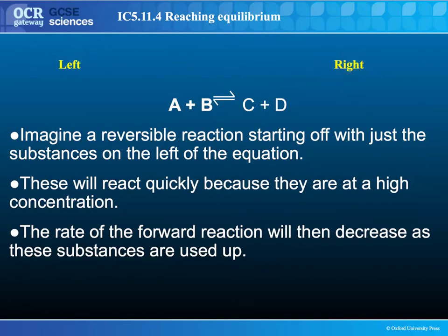But if you have C and D to start with, then the reverse reaction will occur and C and D will react to form A and B. In reality, because you've got two reactions taking place, they both occur at the same time — so at the same time that A and B is reacting to form C and D, C and D will be reacting to form A and B.